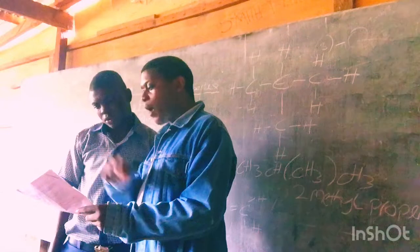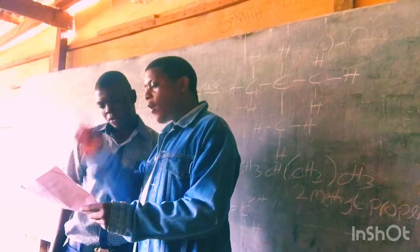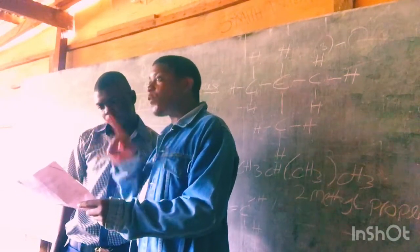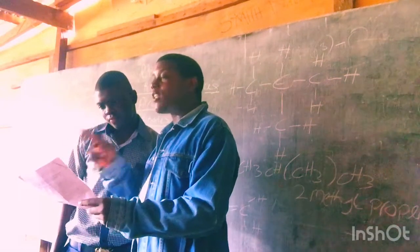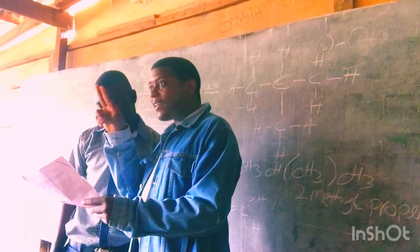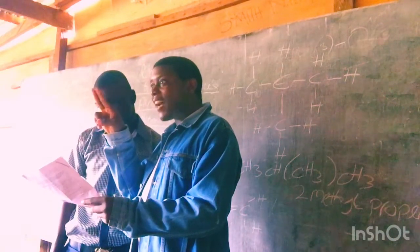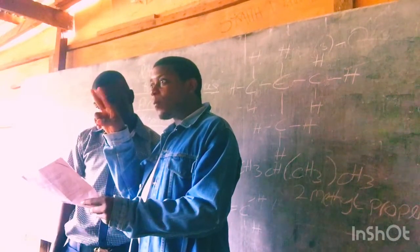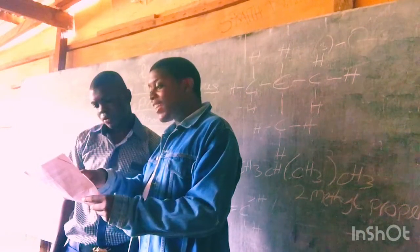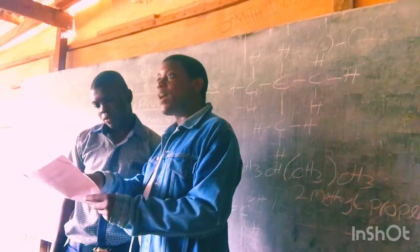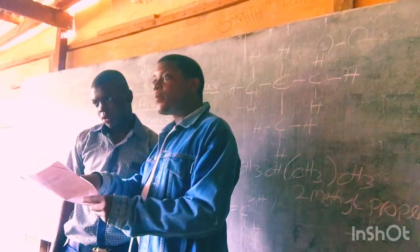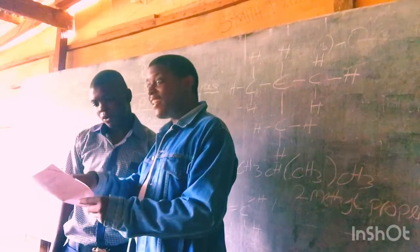Now look at the last compound: C4H8. Compare C4H8 to C4H10 — what is the difference? It's missing two hydrogens, right? So which compound is that? It means it has a double bond, right? That should be an alkene. We call it butene.